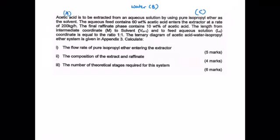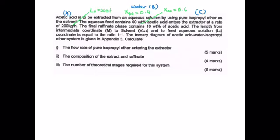The aqueous feed consists of 60% acetic acid, so xA0 is equal to 0.6, and therefore xB0 is equal to 0.4. The aqueous feed enters the extractor at the rate of 200 kilograms per hour, so this is your feed flow rate L0 equal to 200 kg/hr.